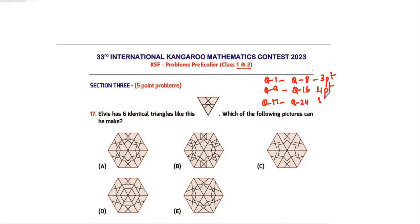Question 17: Elvis has six identical triangles like this. Which of the following pictures can he make? Whenever we get these visual questions, instead of finding the right answer, let's start eliminating the options so that it is easier to get to the correct answer.